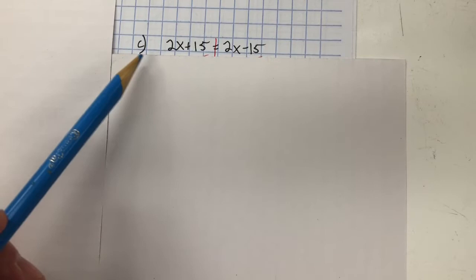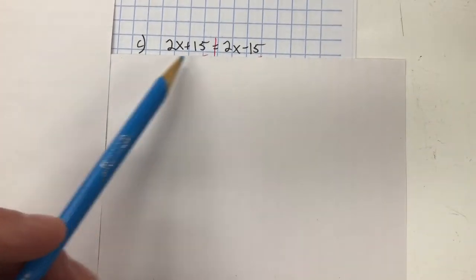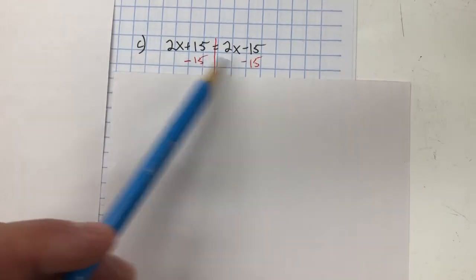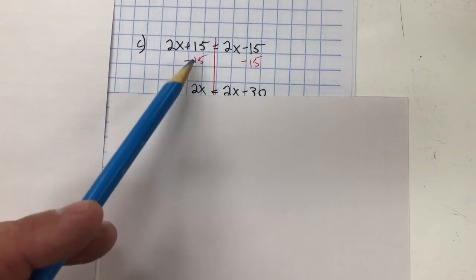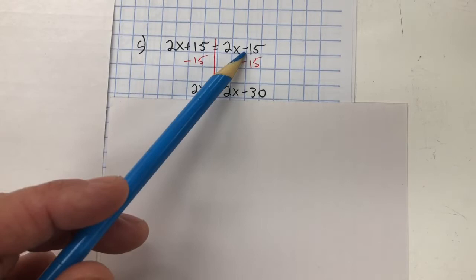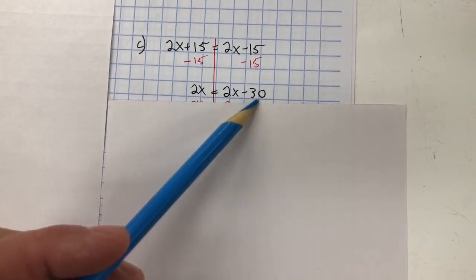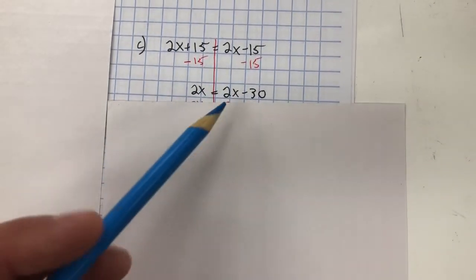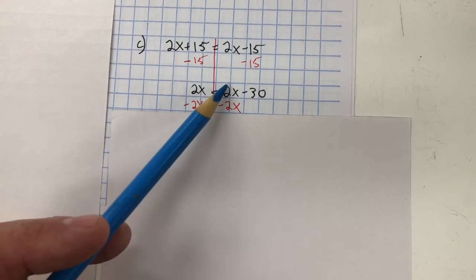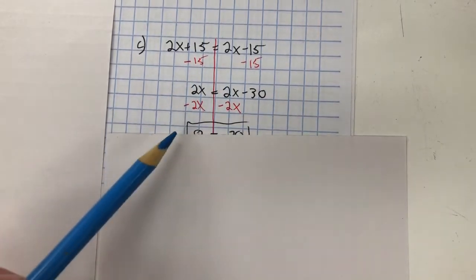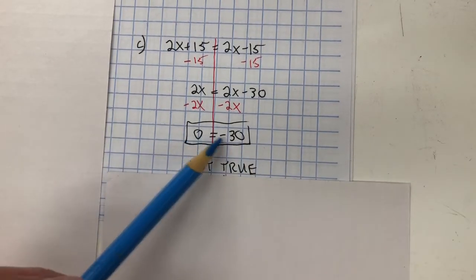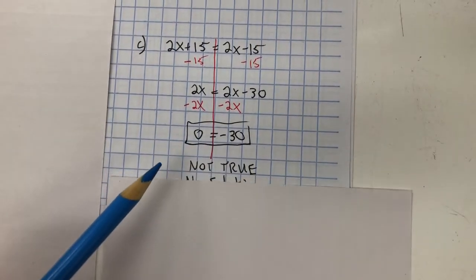For problem C, I'm going to solve for X. The inverse property of addition is subtraction, so I'm going to subtract 15 from both sides. Created a zero pair. I'm left with 2X on the left side. Negative 15 and negative 15 is negative 30. Still don't have X by itself. I'm going to subtract 2X from both sides, and you can see that this is a zero pair. I'm left with 0 equals negative 30. Well, that's not a true statement, so there's no solution.